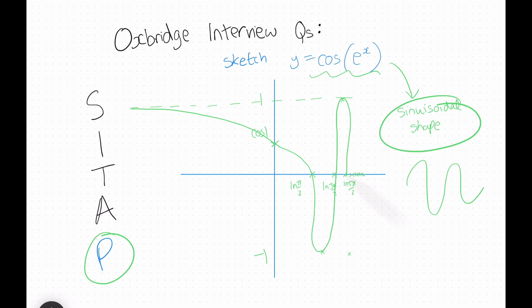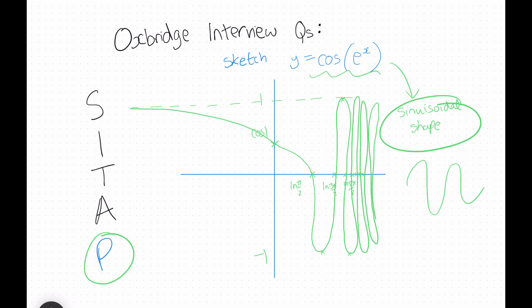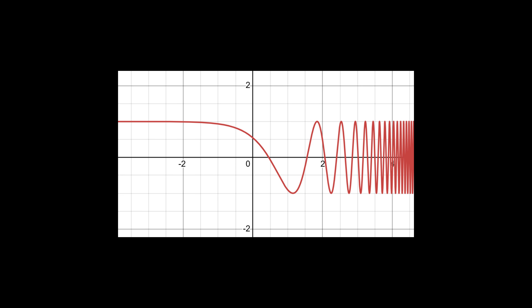As you can see, as x tends to infinity the function gets more and more bunched up. The drawing is a rough sketch, but you get the idea. Here's the actual graph in Desmos for reference.